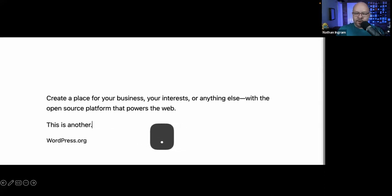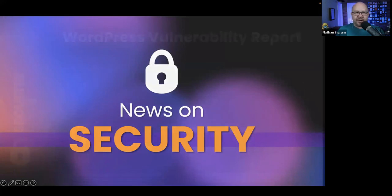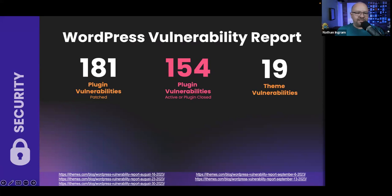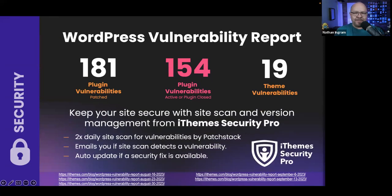Now for security news: the number of vulnerabilities continues to be high — 150-plus every month. This period saw 181 patched vulnerabilities, 154 still-active plugin vulnerabilities, and 19 theme vulnerabilities. Five WordPress vulnerability reports were published since the last roundup. If you're using iThemes Security Pro, it will automatically patch your site when a vulnerability is fixed by the theme or plugin developer, scanning twice a day under version management.